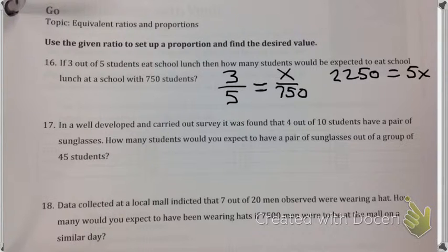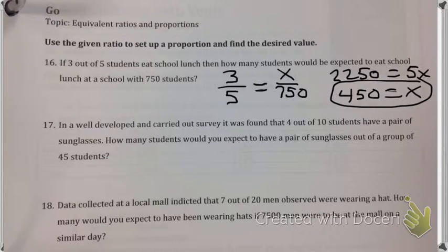Now I'm going to divide both sides by 5. Well actually, I'm going to divide both sides by 10, which gives me 225, and then double it. So that would be 450 equals x. I'd expect 450 people to eat lunch on a given day.